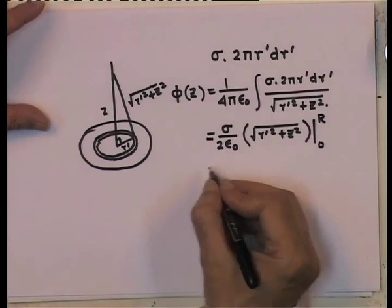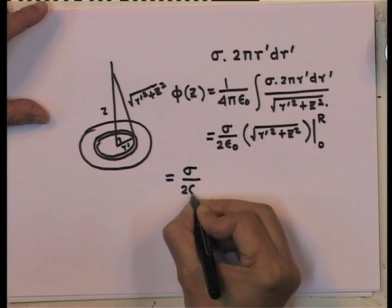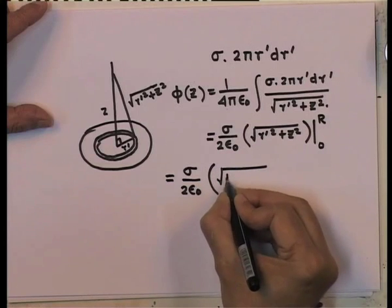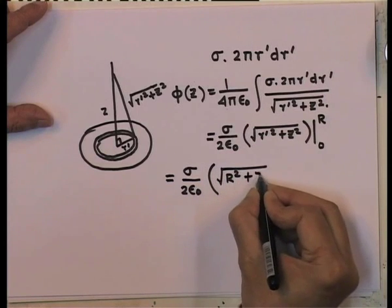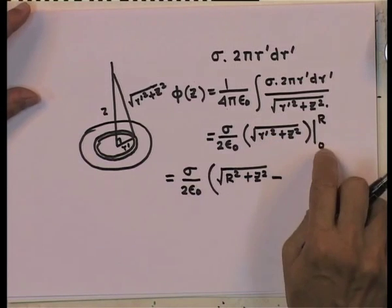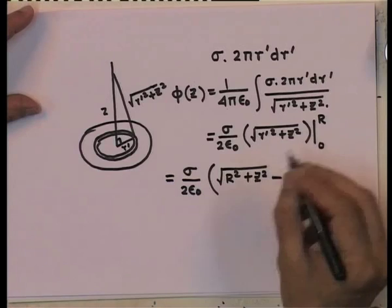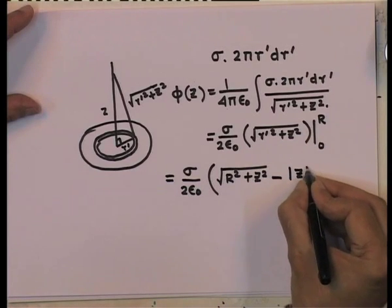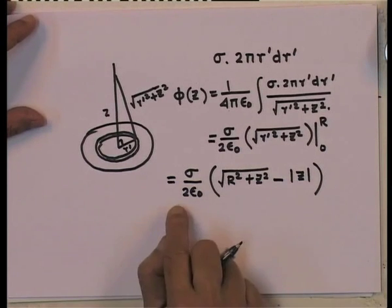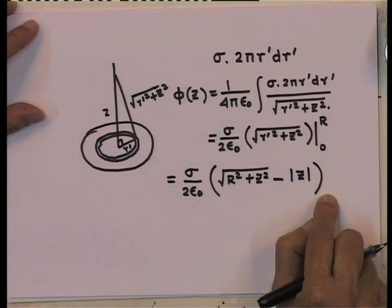The integral is trivially done. The 2 pi and 4 pi leave sigma over 2 epsilon_0. The integrand r prime d r prime over square root of r prime squared plus z squared integrates to square root of r prime squared plus z squared, evaluated from r prime = 0 to R. This gives phi(z) = sigma over 2 epsilon_0 times [square root of R squared plus z squared minus |z|].